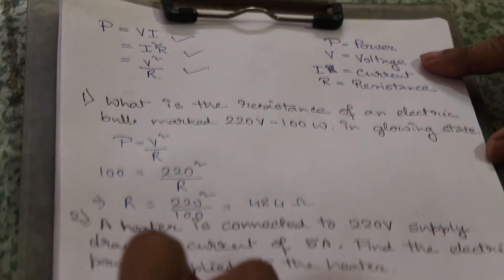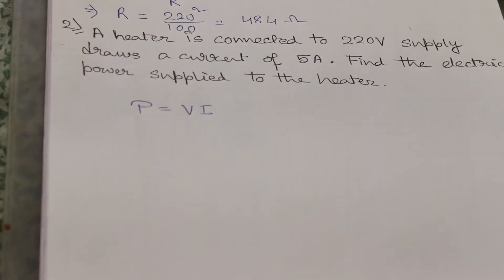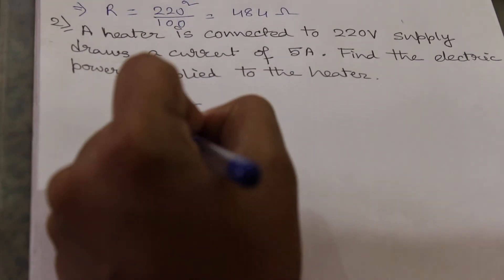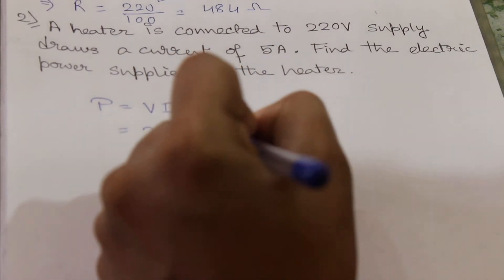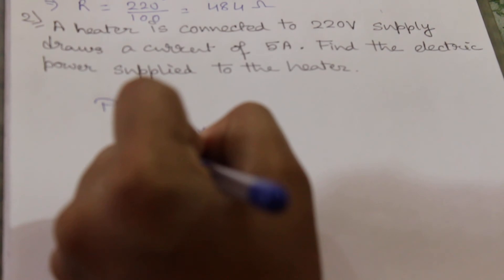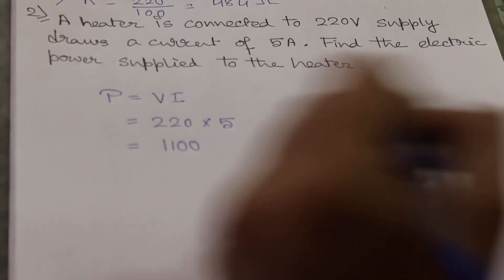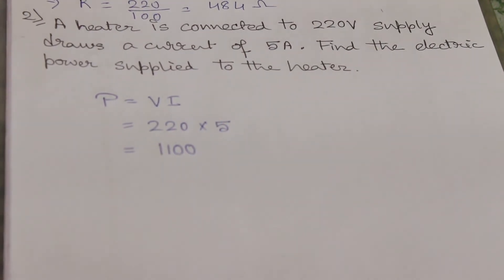P equal to V into I, voltage into current. So V is 220 and current is 5, so the final answer will be multiplying these two, and that will be equal to 1100 watt.